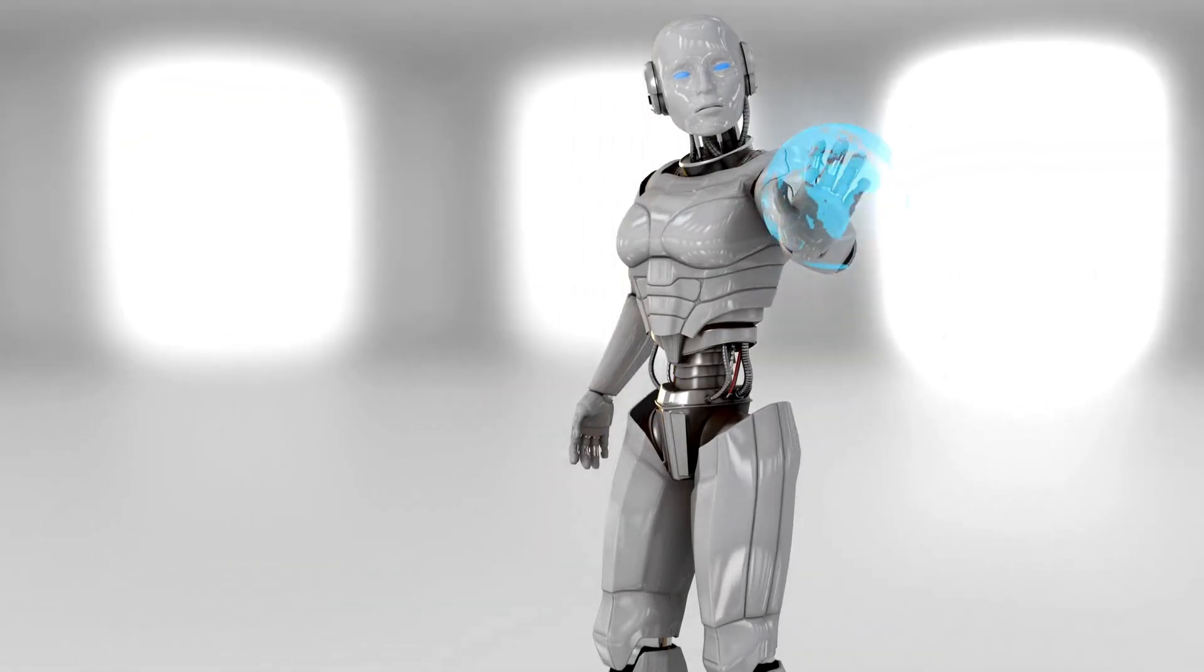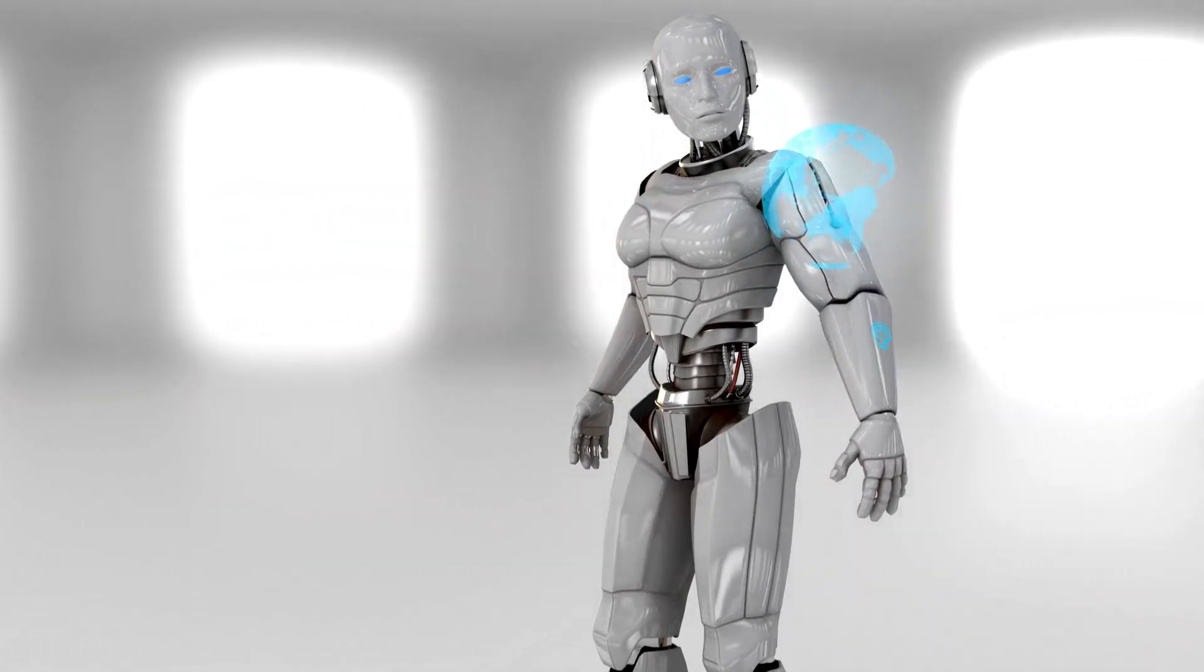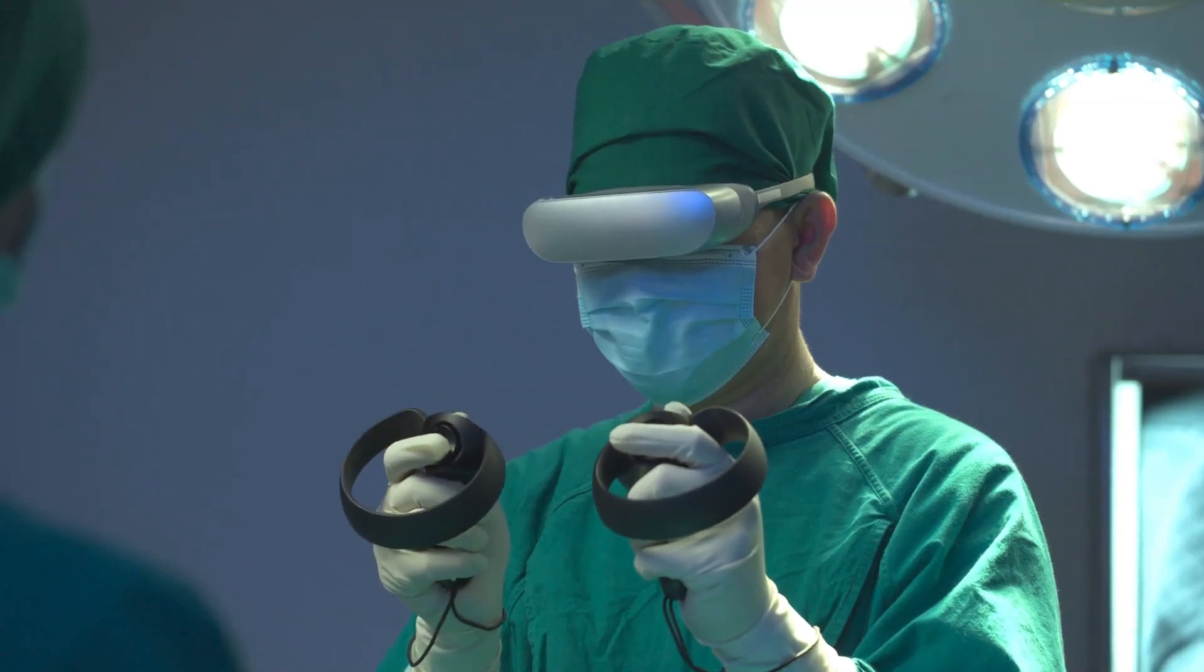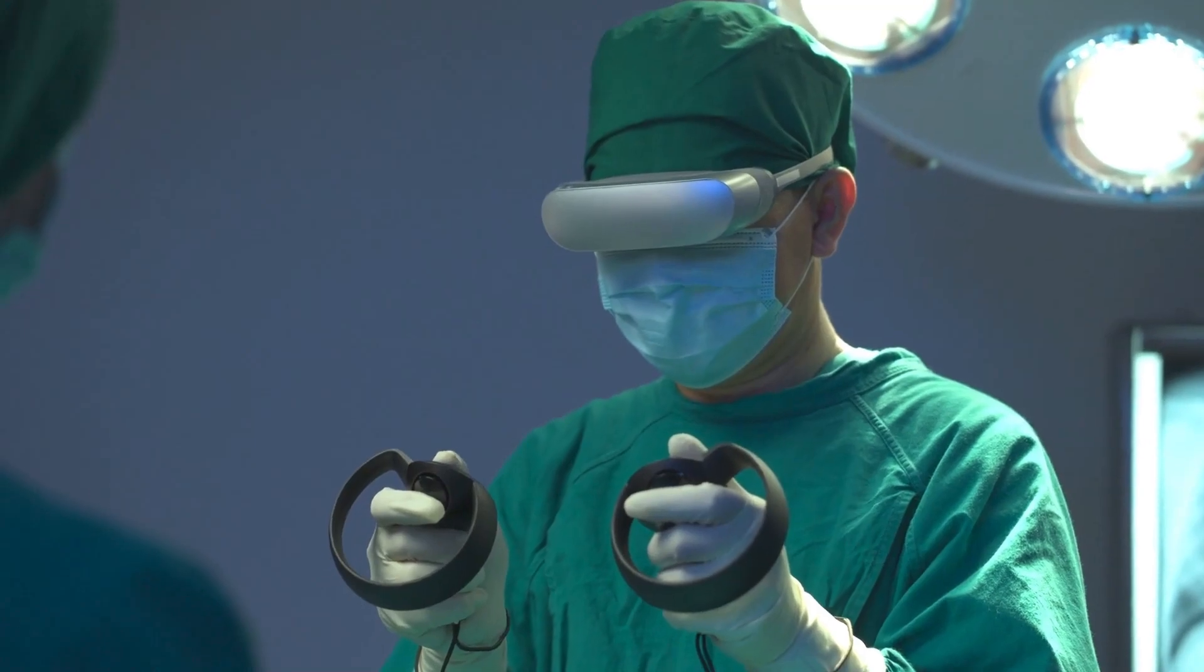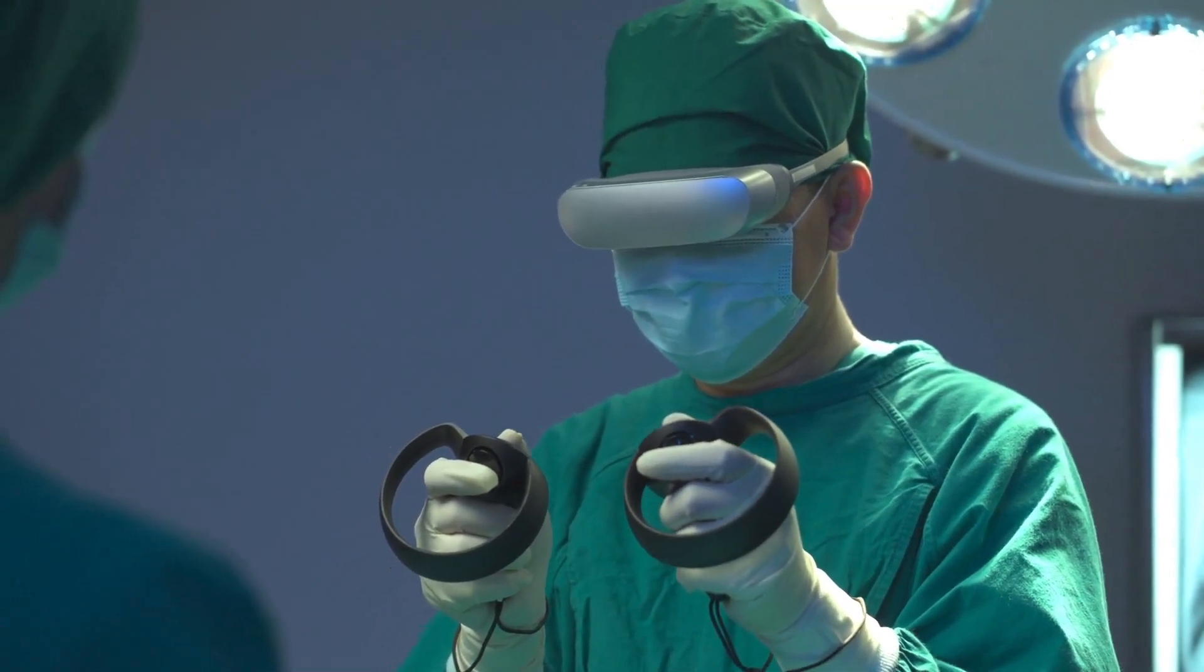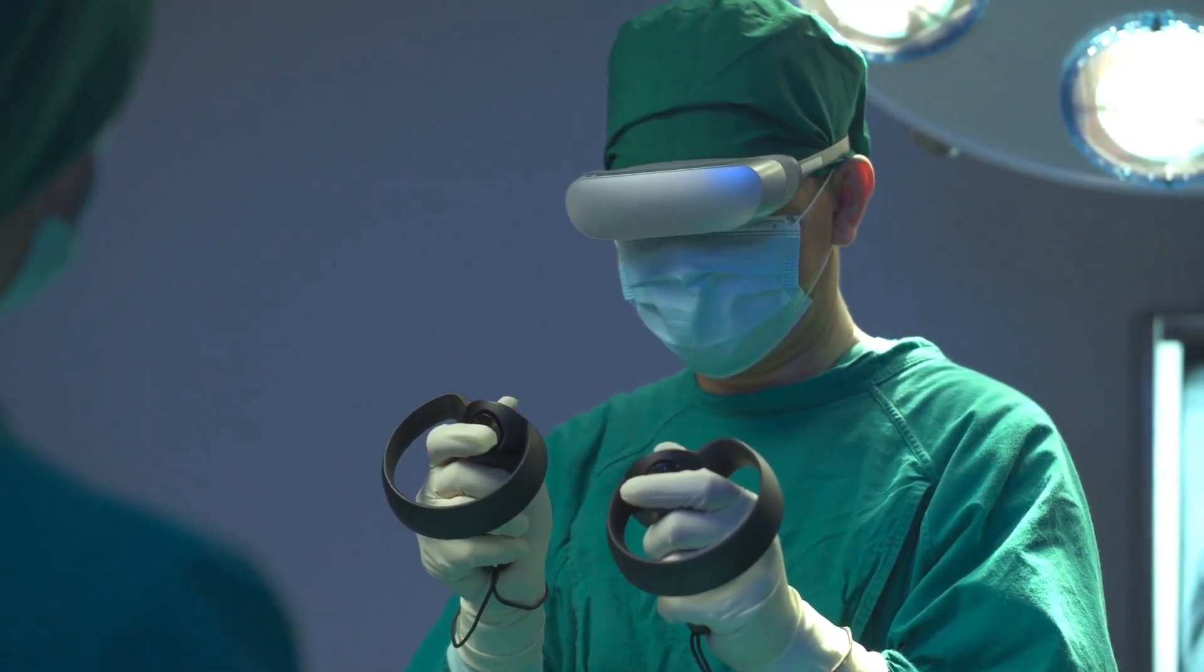Robots, on the other hand, don't experience emotions like fear or anxiety. This is why they don't shy away from tasks. Their decisions are based purely on logic and data rather than emotional states. This doesn't mean robots can't fail. On the contrary, they do fail.